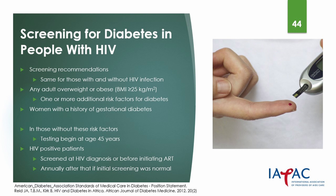Screening for diabetes should be considered in adults at any age if they are overweight or obese, or if they have a risk factor such as physical inactivity, family history, high-risk ethnicity, hypertension, or women with a history of gestational diabetes or delivery of a high birth weight baby. In those without risk factors, screening for diabetes is recommended from the age of 45 onwards. People with HIV should be screened at HIV diagnosis or before initiating ART and then annually after that. Generally, type 1 diabetes presents with acute symptoms and markedly elevated blood glucose levels and in most cases should be diagnosed as soon as the onset of hyperglycemia is identified.